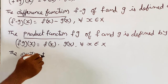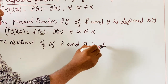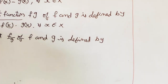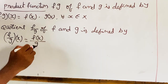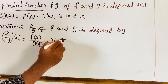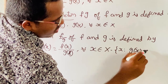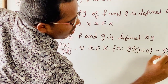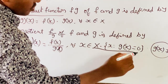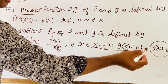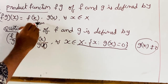Next, the quotient function: F by G is defined by F by G of X is equal to F of X by G of X, for all X belonging to X minus the set where G of X equals 0, meaning G of X is not equal to 0.